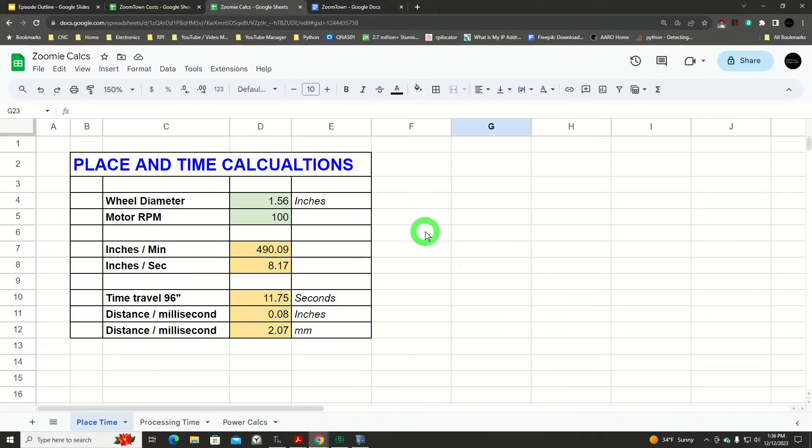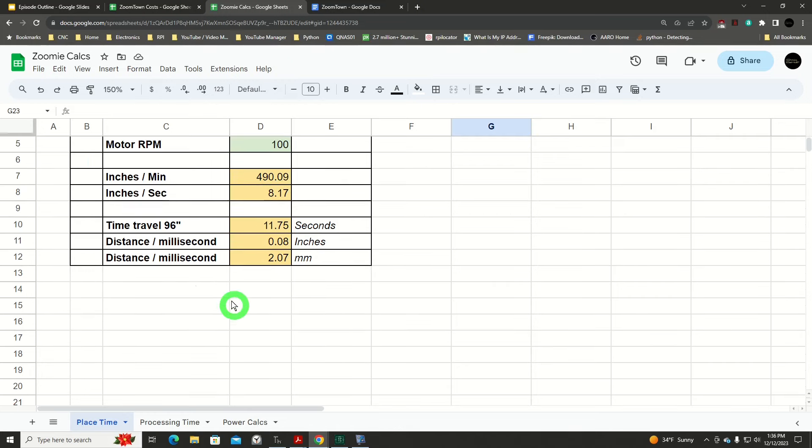Here's a simple little spreadsheet to deal with the motion and time issue. Our wheel diameter is 1.56 inches, our motor rpm is 100. With that, I can very easily calculate how many inches a minute the zoomy can move, which is 490, which works out to inches per second, or 8.17 inches per second. One of the fun facts is it'll take 11 and three quarters of a second to go from one end of the layout to the opposite end. That's 96 inches.